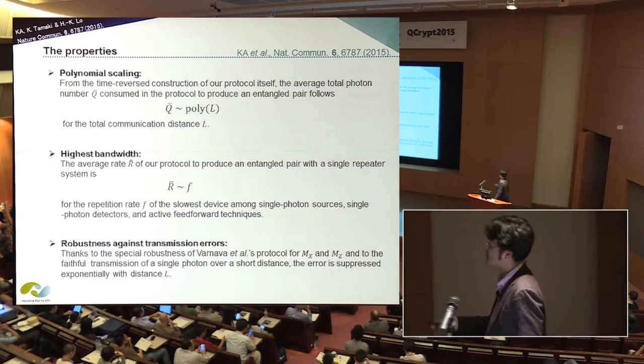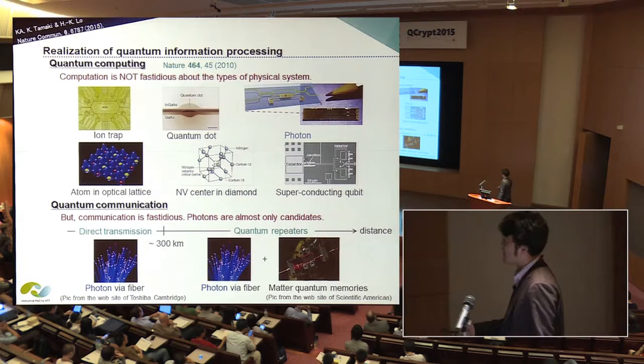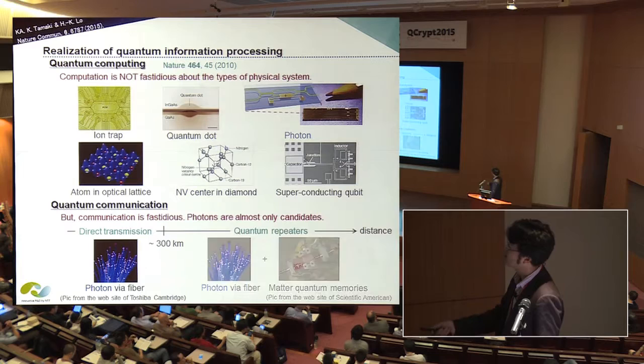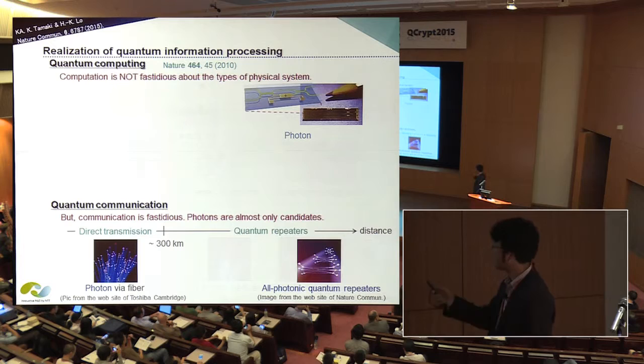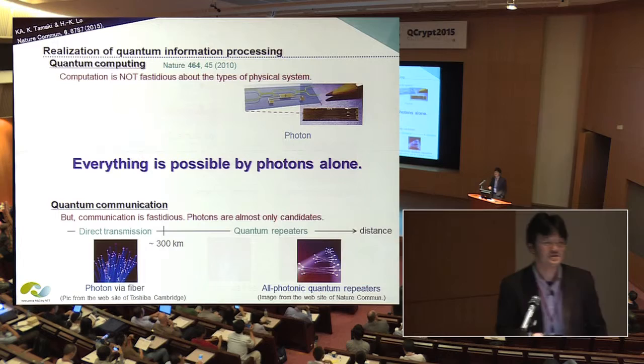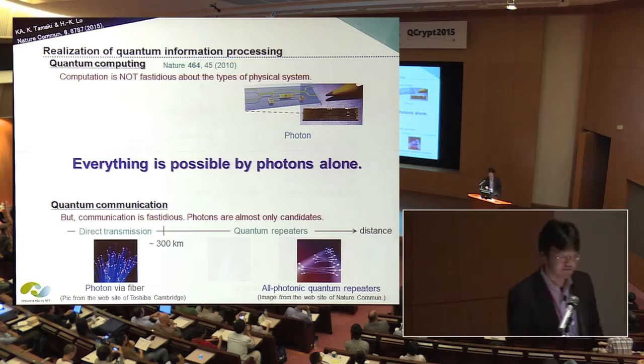Thanks to finding the all-photonic quantum repeater, the situation becomes changed. Even quantum repeaters are possible by using optical devices, or only photons. If we see quantum computation, a photon is also a good candidate to realize it. Therefore, we can now understand every kind of quantum information processing by photons alone. Photons are the unified language to compare the complexity of any kind of quantum information processing. My final message of this talk is just: think with photons. Thank you for your attention.